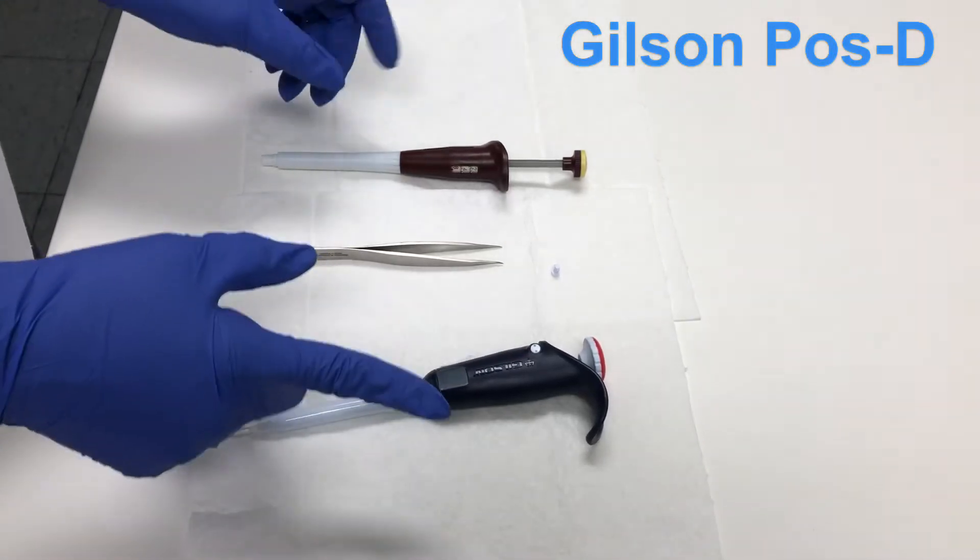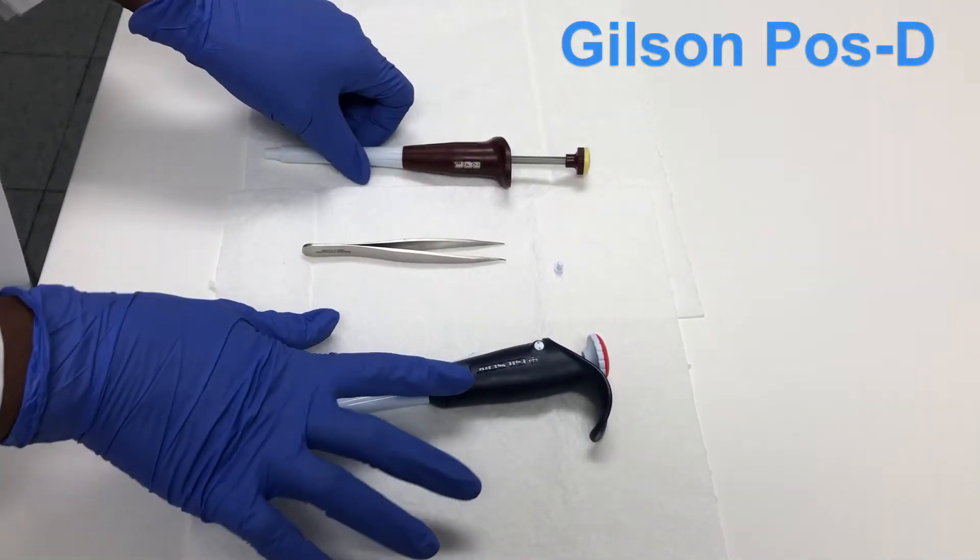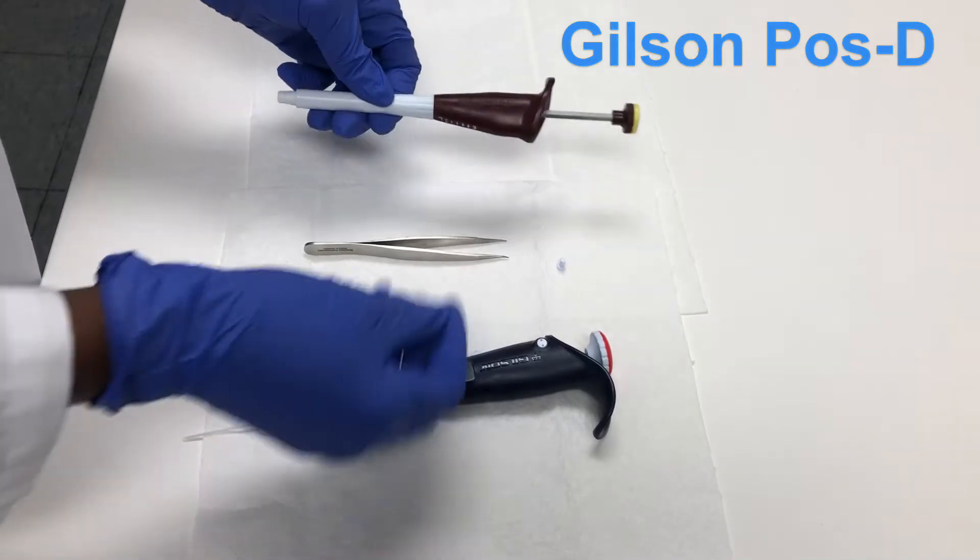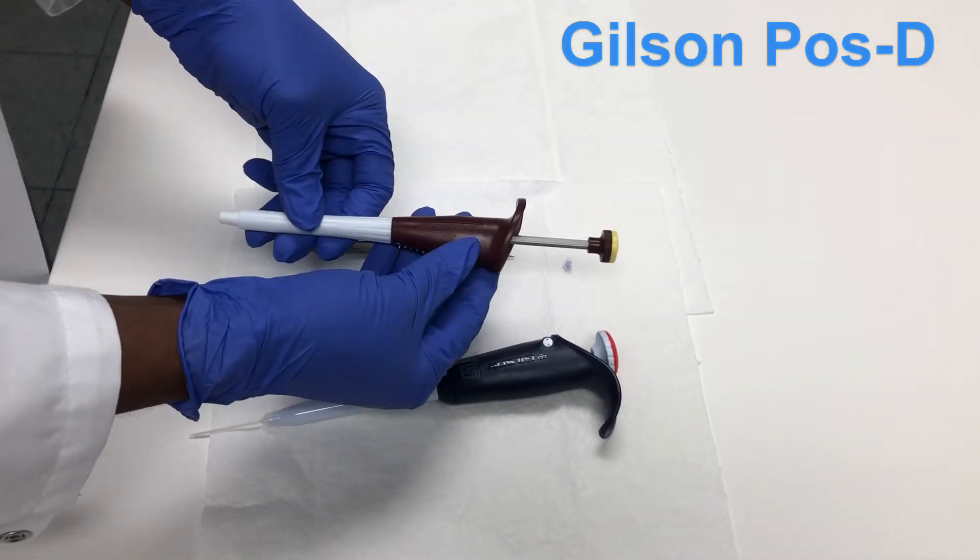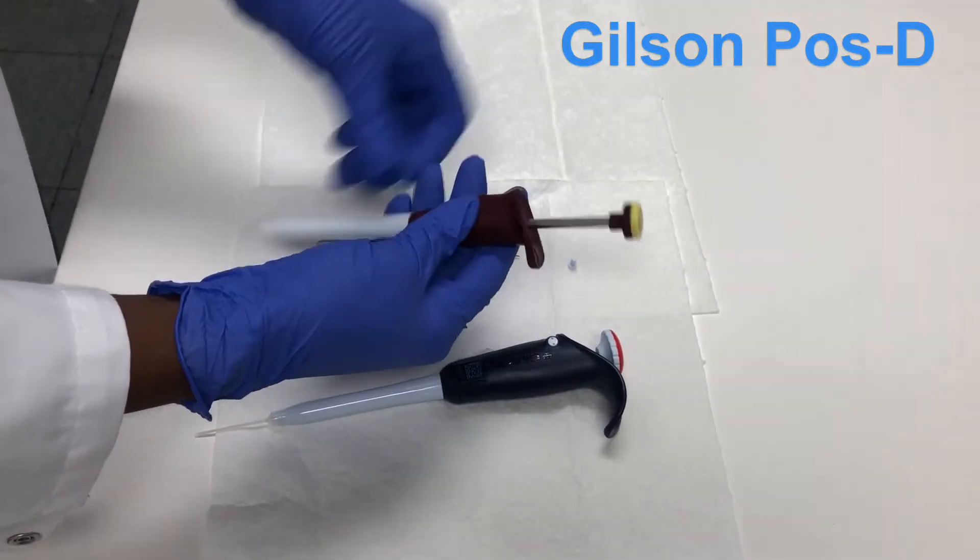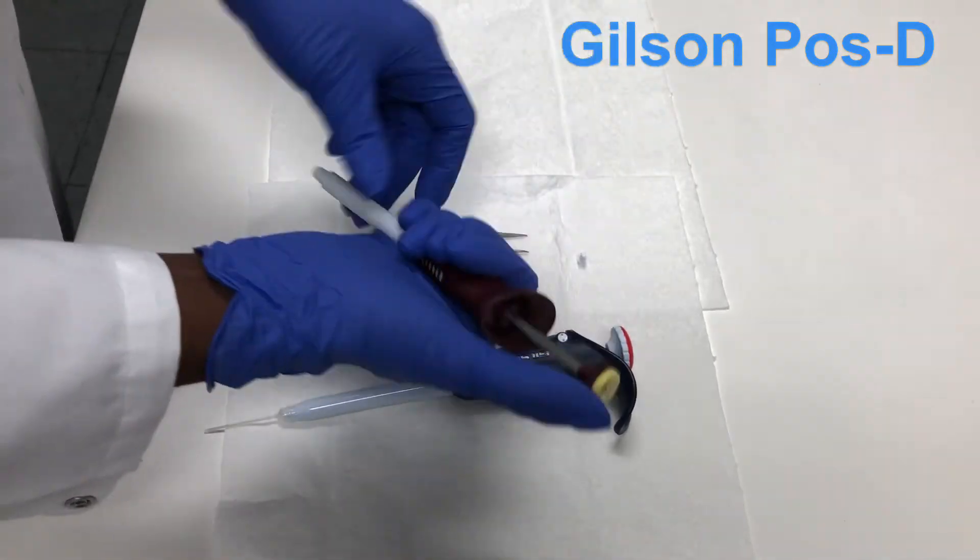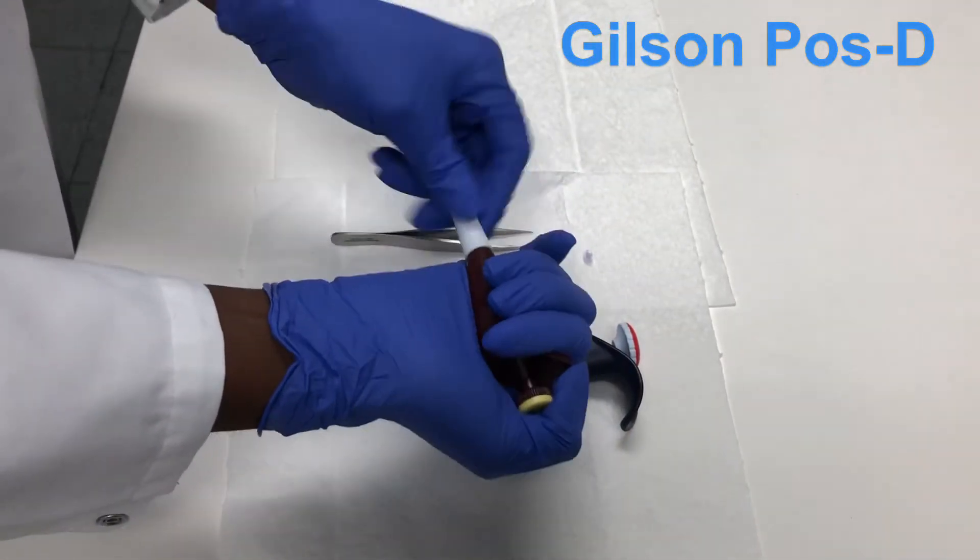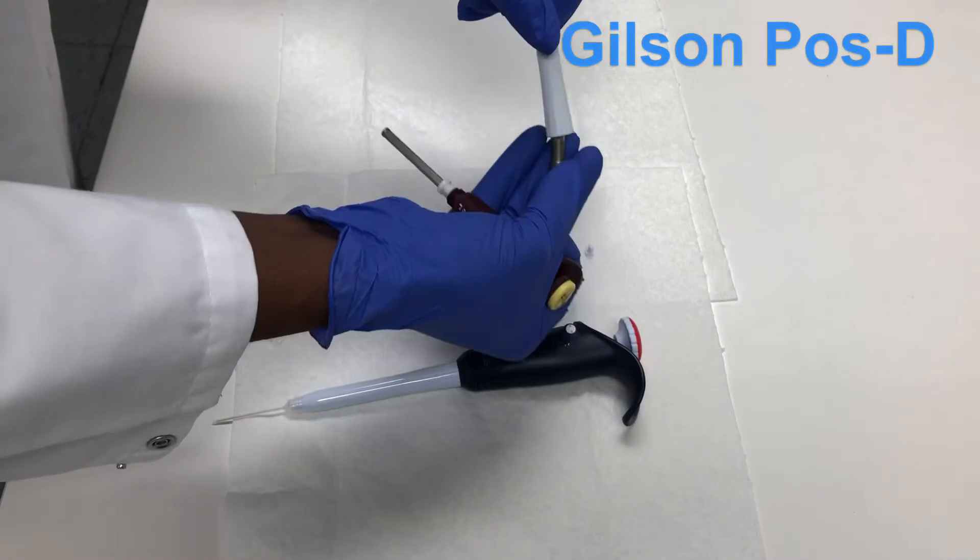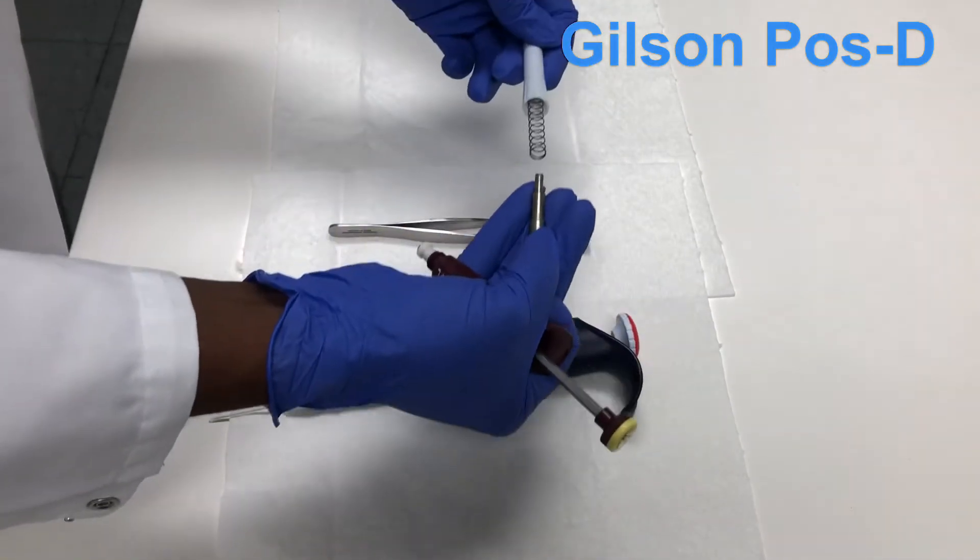Hello everyone, today we'll be learning about Gilson positive displacement pipettes. You might have seen this micro man before. If you are cleaning it, you do not need to grease it. Just take the inner parts out, clean them with your supplies as per the SOP, and then put it back.